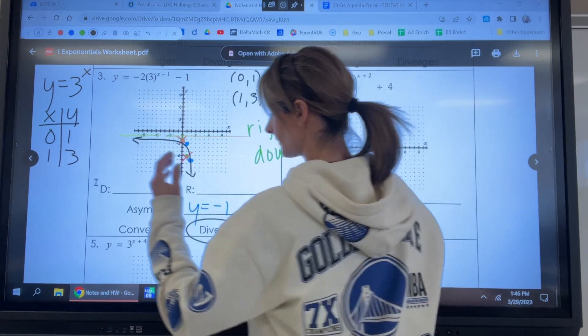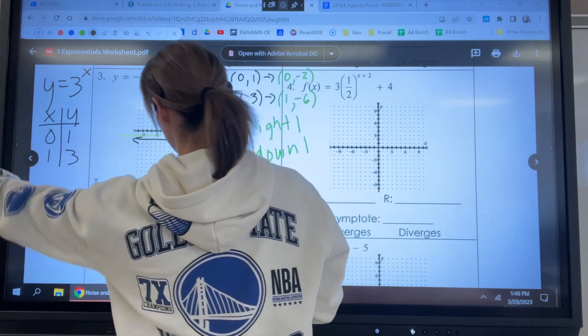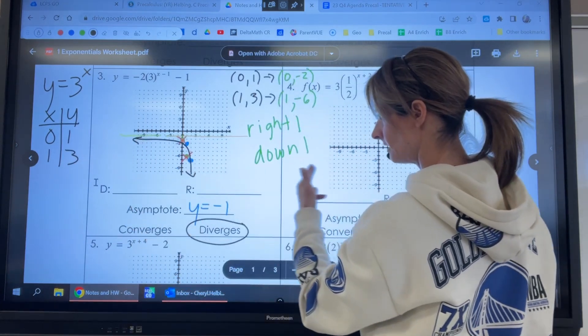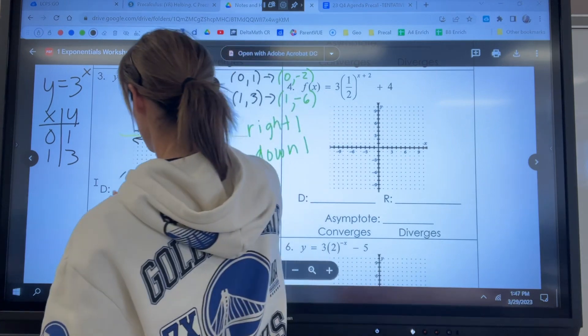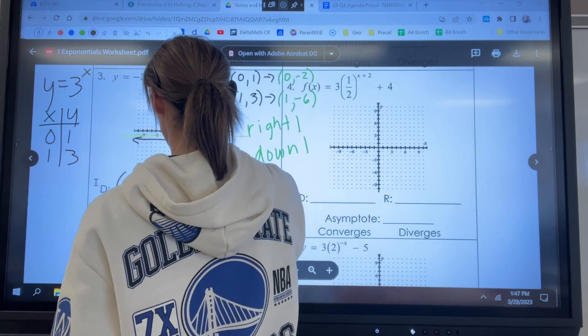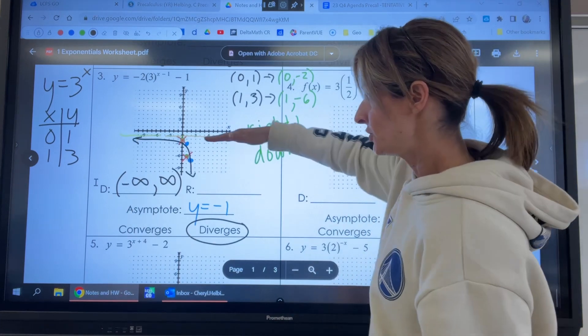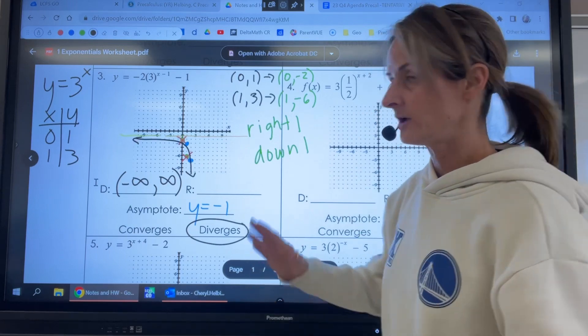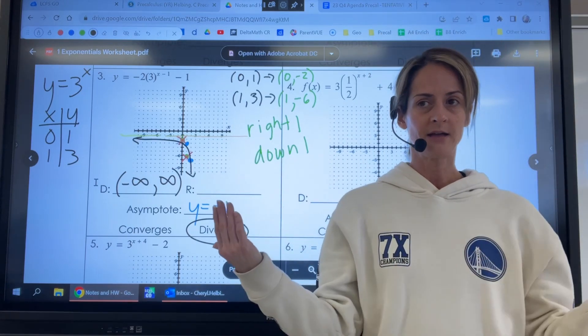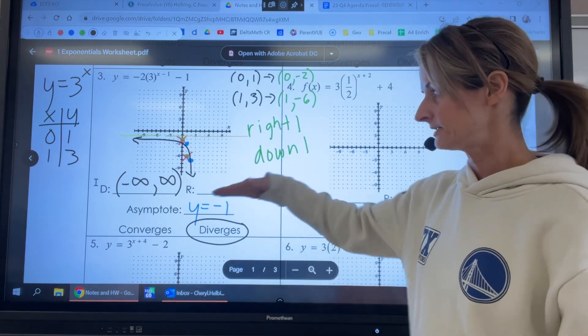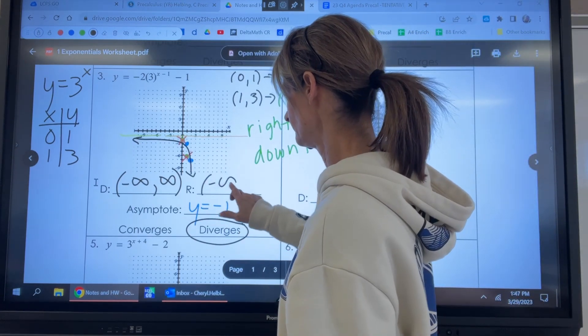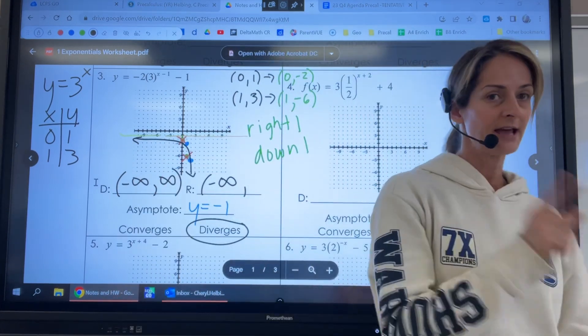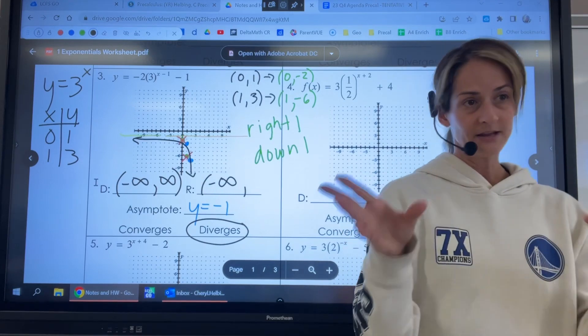Domain. I can pick any x value, negative, come up, and it's going to continue going up positive. So that's from negative infinity to positive infinity. However, the range is restricted. There's no graph above the y value of negative one. So we're going to go, we always write our range in our domain from low to high, right, interval notation. So the lowest value is negative infinity up to negative one, but not including negative one, because there's an asymptote there. So the way we represent that is with parentheses.